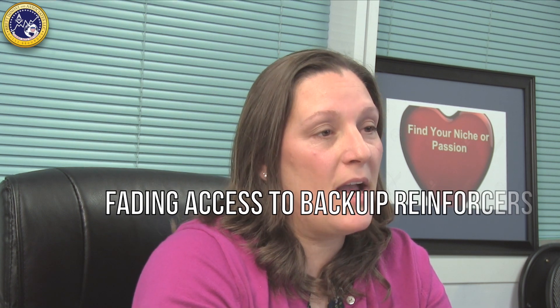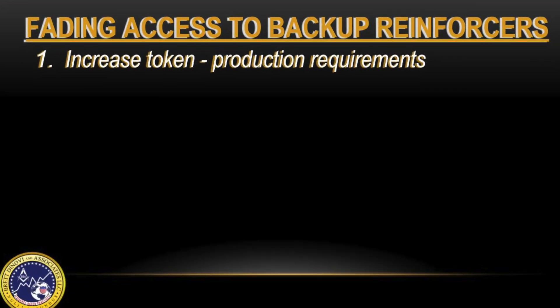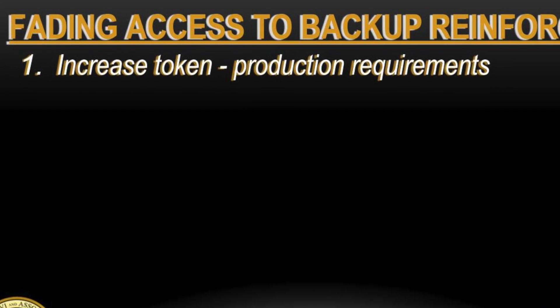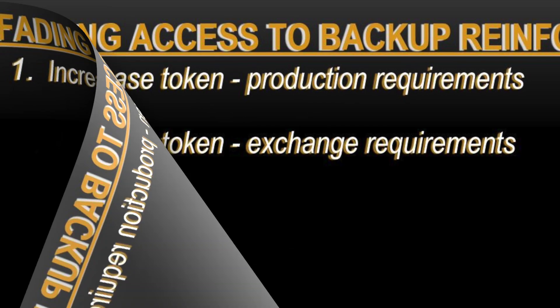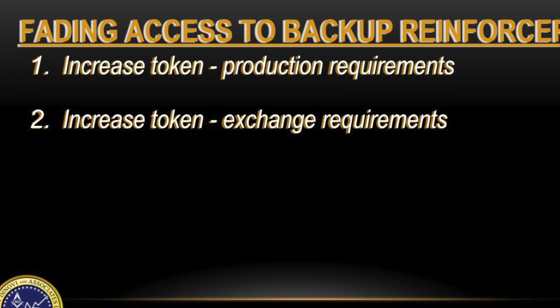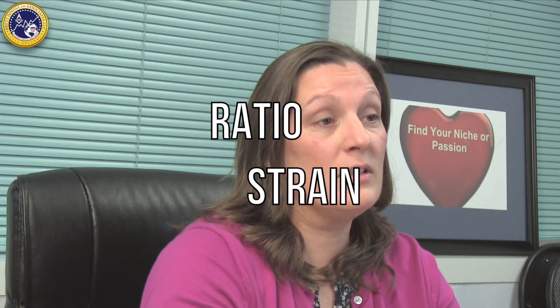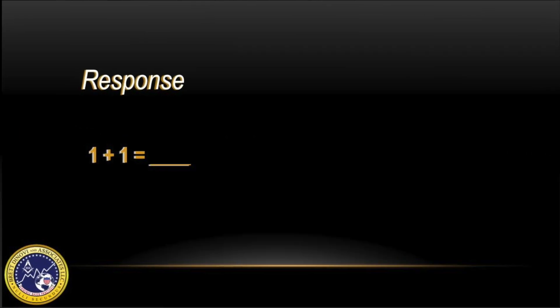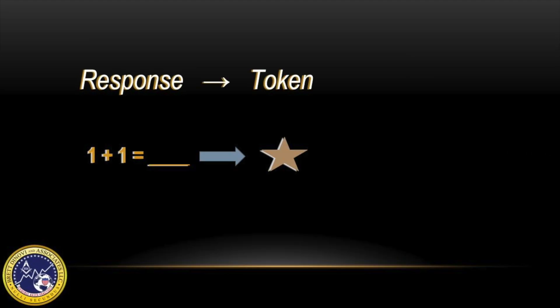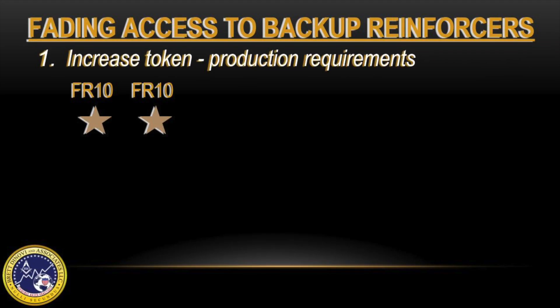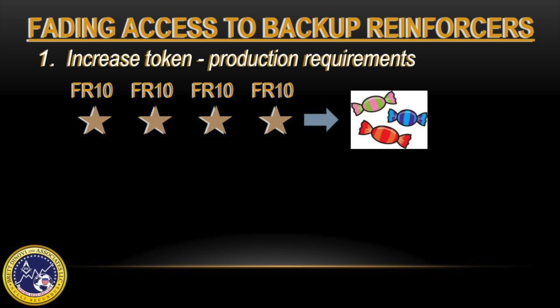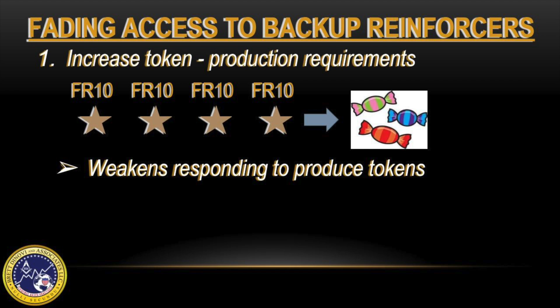Fading access to the backup reinforcers can occur in two ways: one is to increase the token production requirements, and the other is to increase the exchange production requirements. Both of these alternatives have some limitations. Increasing token production requirements can result in effects such as ratio strain. Previously, an individual would complete one task and earn a token.